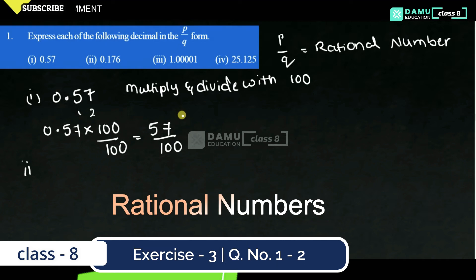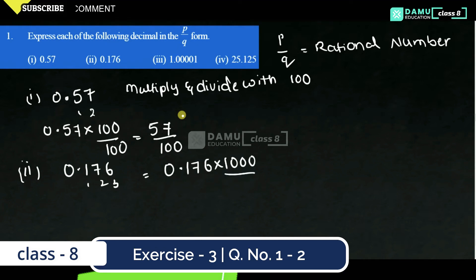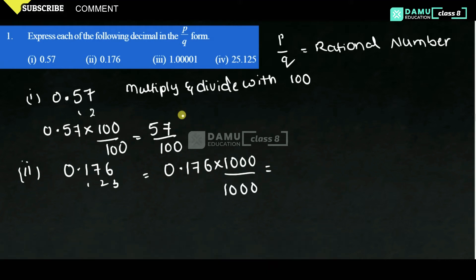That is our first answer. Our next one is 0.176. Here, 1, 2, 3 — 3 zeros. We will multiply and divide with 0.176 into 1000. How many places are there? That many places we multiply and divide. Then we get 176 by 1000.